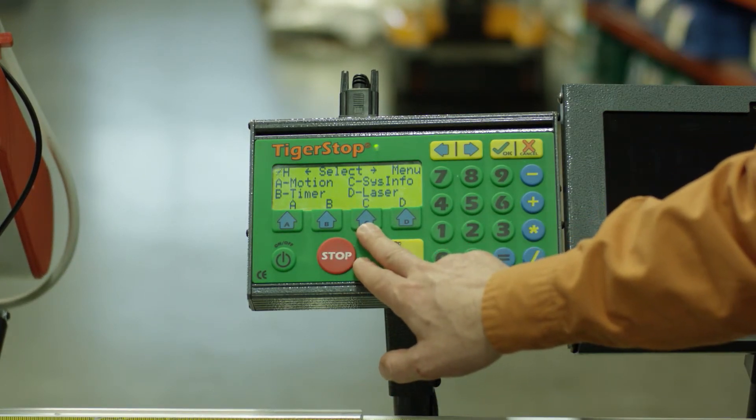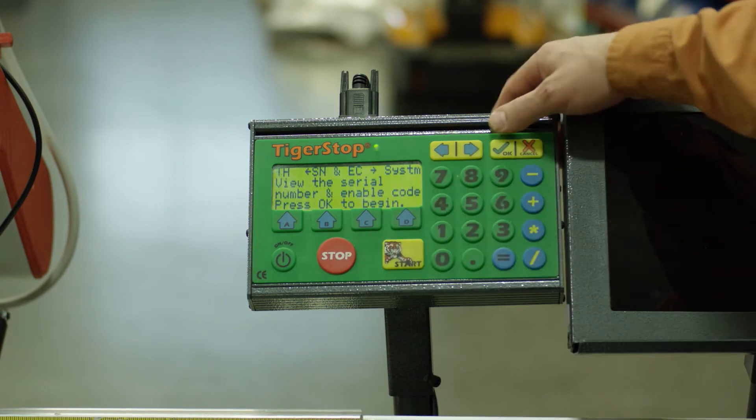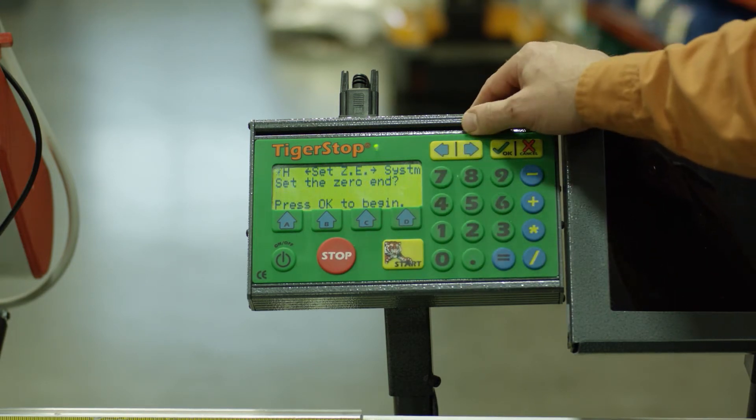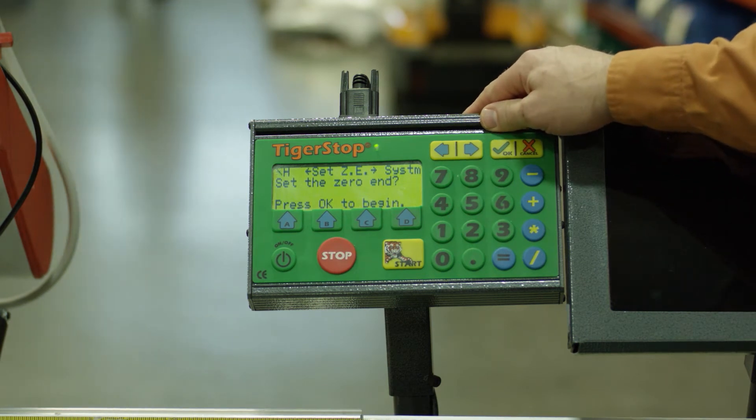We're going to go into system information, so we're going to press C and we're going to press the right arrow again to scroll through until we see set the zero end.